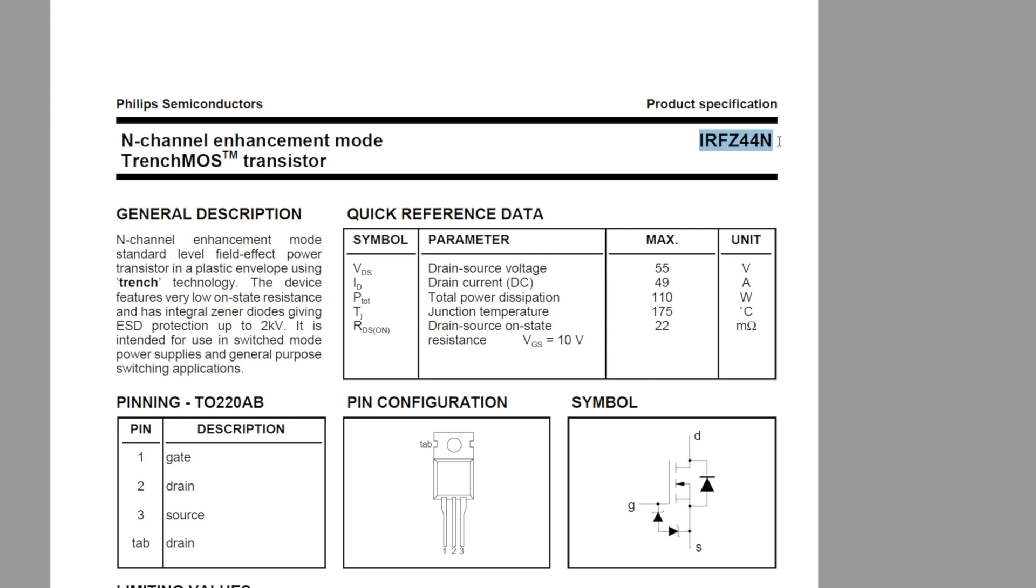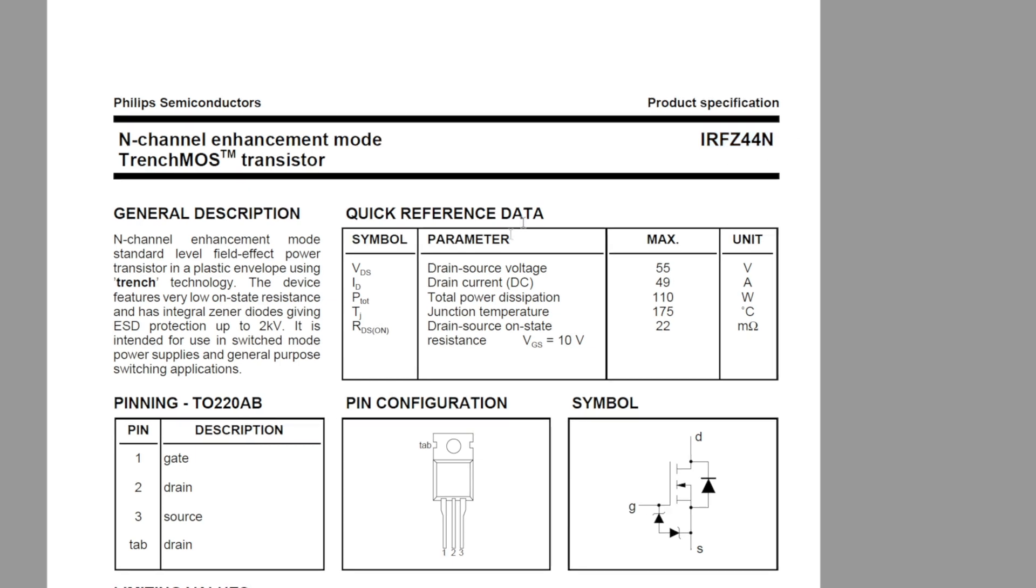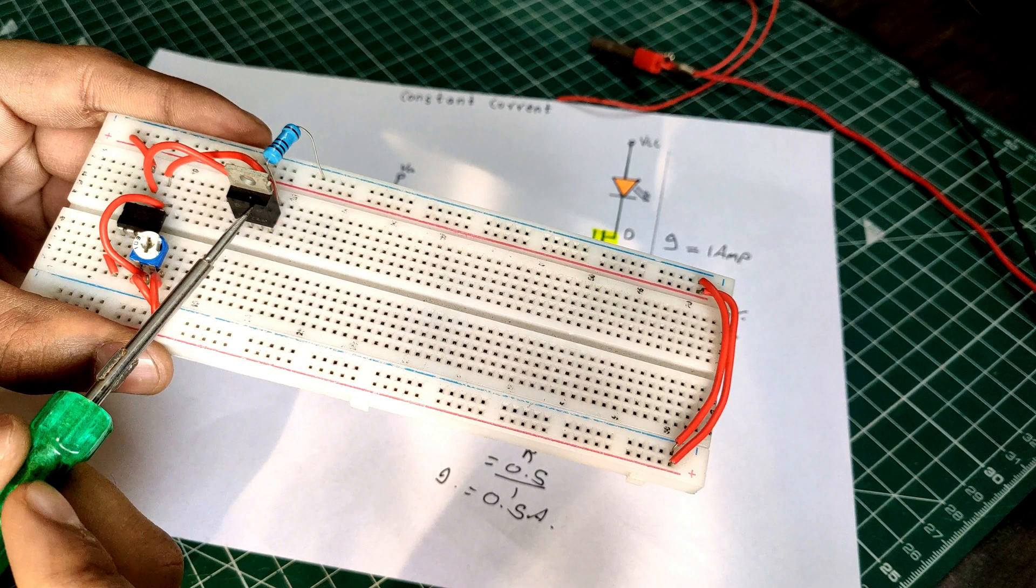Always check the parts datasheet for the gate voltage and drain to source resistance values, but for our circuit, a Z44N will do the job.